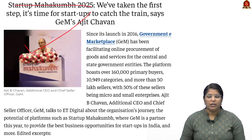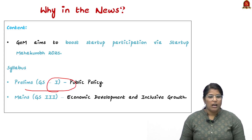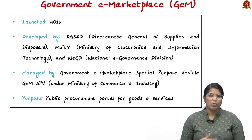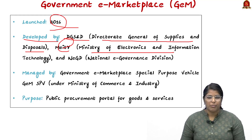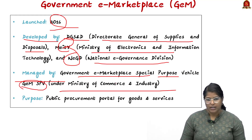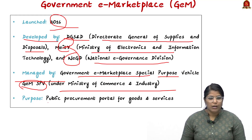Recently, Startup Mahakumbh 2025 was organized, which is why Government e-Marketplace is in news. This topic will be asked under GS Paper 1 in prelims — especially public policy — and in GS Paper 3 mains under economic development and inclusive growth. Government e-Marketplace was launched in 2016. It was developed by DGS&D (Directorate General of Supplies and Disposals) along with MeitY and NEGD (National e-Governance Division). It is managed by GeM SPV under the Ministry of Commerce and Industry.